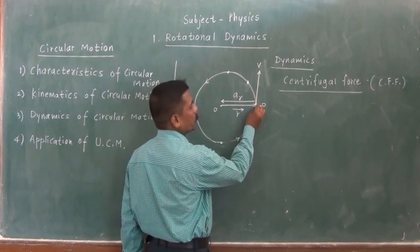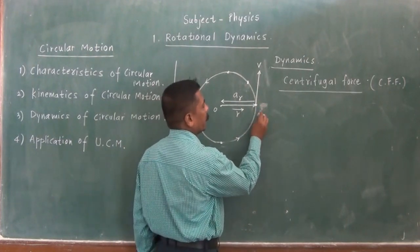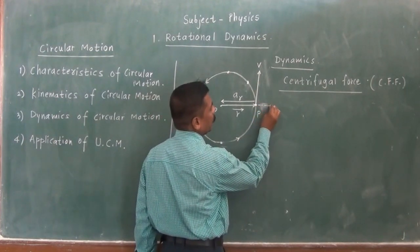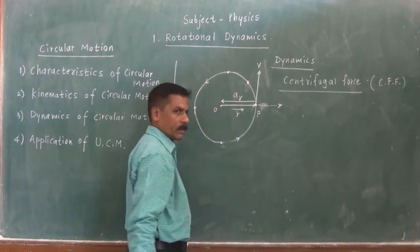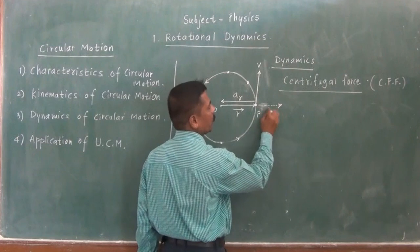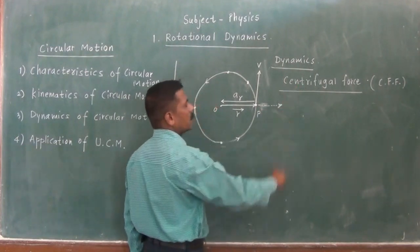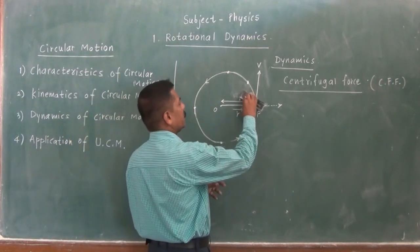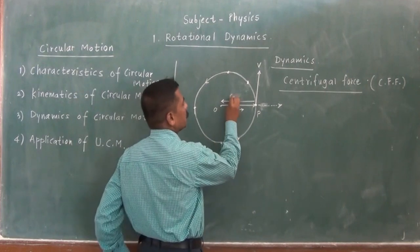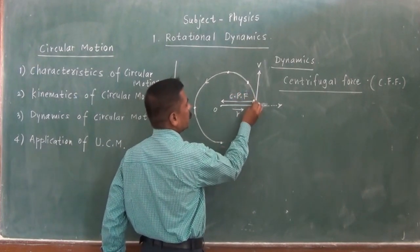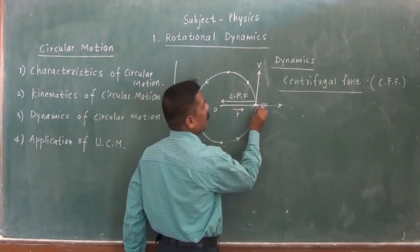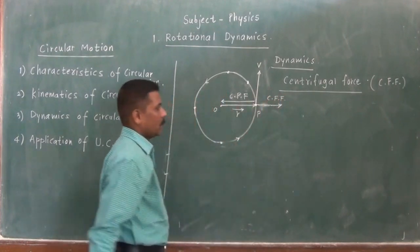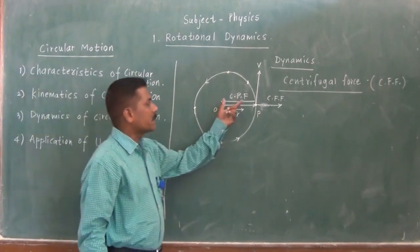The centripetal force and the centrifugal force are in opposite directions. However, though they are in opposite directions, their magnitude is always the same. The centrifugal force disturbs the particle and acts away from the center.